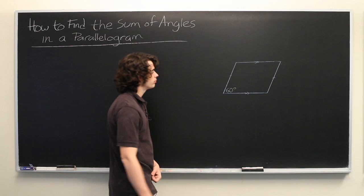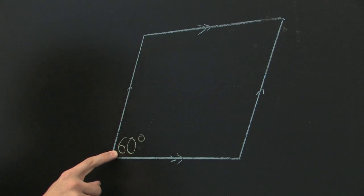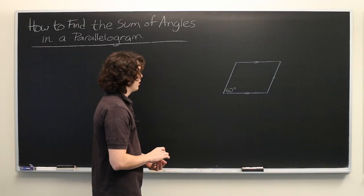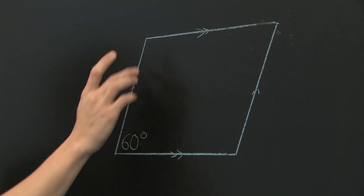Here we have a parallelogram, and we're told that the bottom left interior angle is 60 degrees. We're asked to find the sum of all of the interior angles.